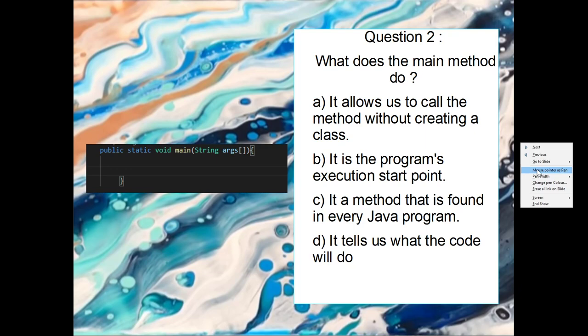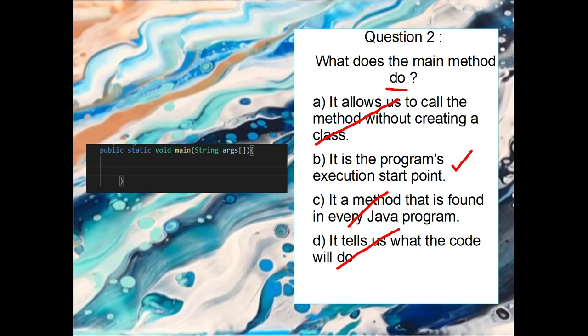Okay, number two. What does the main method do? Let's have a look. So it allows us to call the method without creating a class. It does not do that. It is a method that is found in every Java program. Well, that is correct. It does what the code will do. It tells us what the code will do. It's not that. So it's between these two. And because we're asking what does it do, not where it is found, I would say that it's in B. It's the execution start point. It's where the code starts. So the right answer is B.